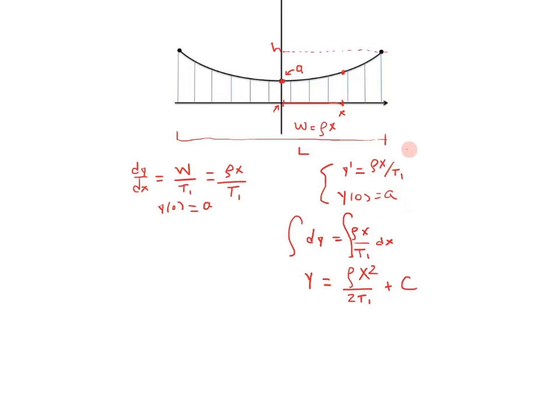Now, we actually have enough information to figure out the c and the t1. The first thing that we know is that y at zero is A, which if I plug in A for y and zero for x, I get c is equal to A. So, clearly, that means y is equal to rho x squared over t1 plus A.